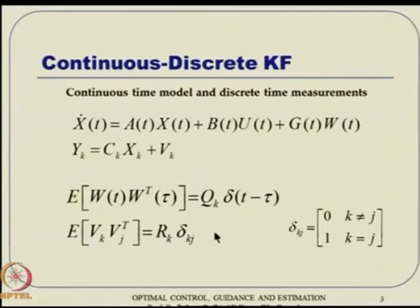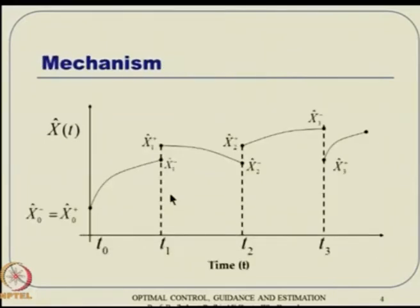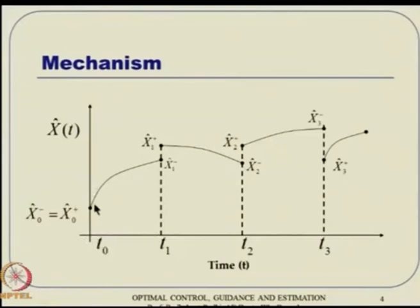Using this notation, the mechanism again follows prediction-correction. We start with some value at T-naught minus, which we also assume is the corrected value — an initial guess. Then we propagate and get a measurement. We update it, and if you get a measurement at T-naught itself, you can update there too and then proceed. So this is the propagation: we predict, then based on measurement this correction happens, then again we predict and update.